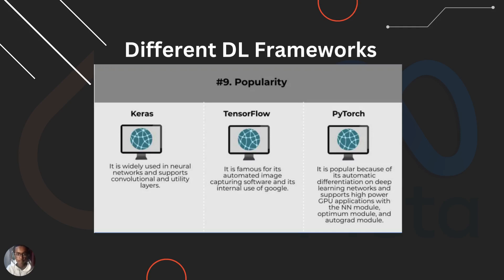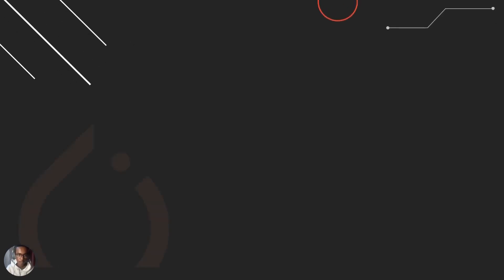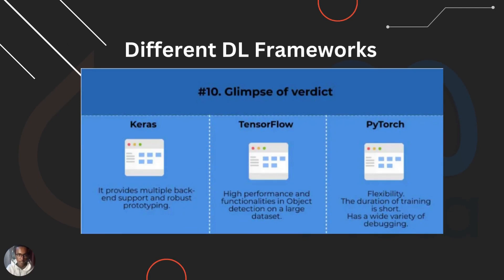These are some of the modules we are going to use in the coding tutorial. The NN module enables us to create different types of neural networks. The Optim module helps us use different optimizers such as Stochastic Gradient Descent and the Adam optimizer. The Autograd module helps us track gradients and the computation graph. As a verdict, Keras provides multiple backend support and robust prototyping. TensorFlow has high performance and object detection functionality on large datasets. The advantage of PyTorch is flexibility, shorter training duration, and a wide variety of debugging capabilities.